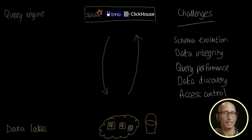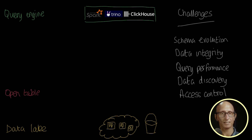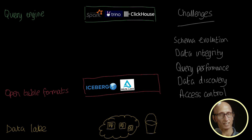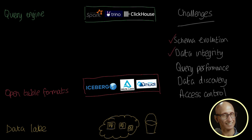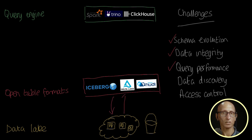A bunch of folks came across these problems around the same time and tried to address them, and that's led us to the next level of abstraction: open table formats. The big three at the moment are Iceberg, Delta Lake, and Hudi. These table formats solve a few of our issues — schema evolution is handled like you would in a SQL database, data integrity is handled by ACID support, and for query performance, the query engine can analyze table format metadata to understand the partitioning scheme and ignore irrelevant files.